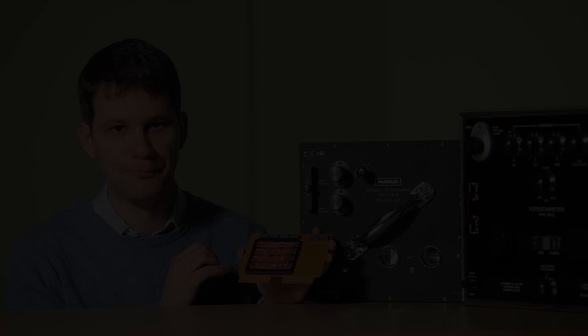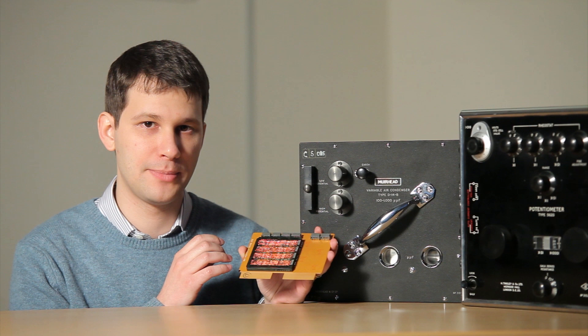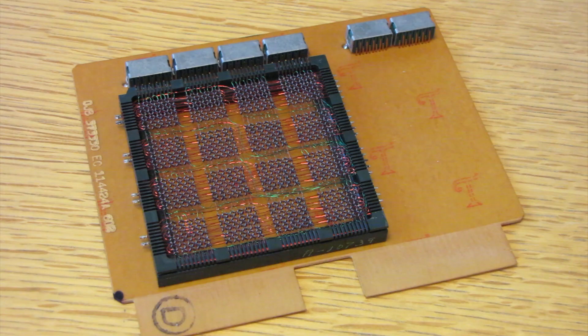Core memory has no moving parts and if stored in a special rack, it's robust and reliable. When we turn the power off, it remembers its data.